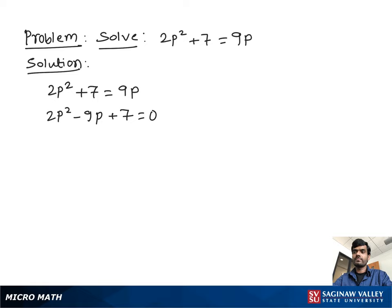To find the factors, we need to multiply the coefficient of p square, which is 2, with the constant 7. We get 14, and the factors of 14 are 1 and 14, and 2 and 7. If we put a negative sign in front of 2 and 7, that gives us 14 on multiplication and on addition gives us negative 9. So write 2p square minus 2p minus 7p plus 7 equal to 0.